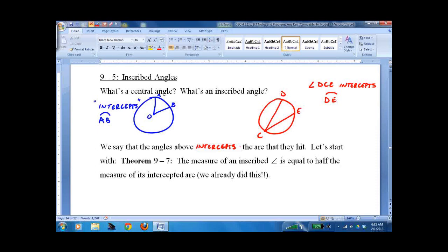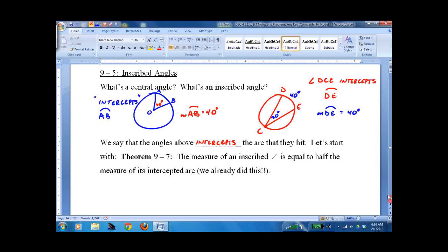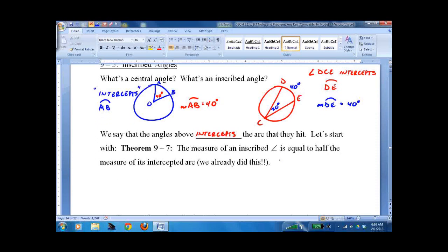So what's the measure of the angles? How do we figure it out? Well, up here we had say 40 degrees, then the measure of arc AB is 40 degrees. Here if we have 20 degrees, then the measure of arc DE is 40 degrees. So it's half. That's what this says - the measure of the angle is half the intercepted arc.